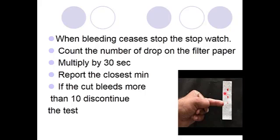So there are three drops, we have to multiply by 30 seconds. So we get 90 seconds which is one minute and 30 seconds, one and a half minute.